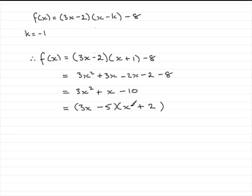We've got our 3x squared, then we're going to get 6x minus 5x. 6x minus 5x is the x. And then minus 5 times 2 is the minus 10.